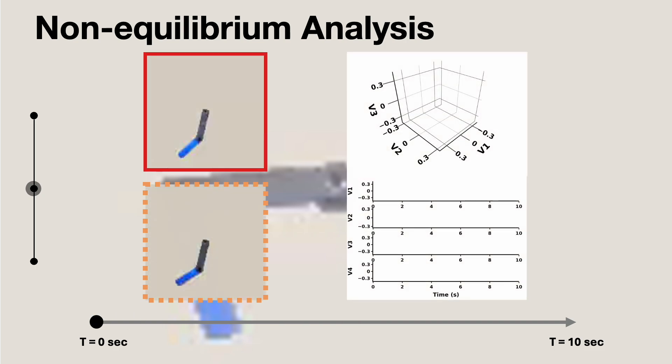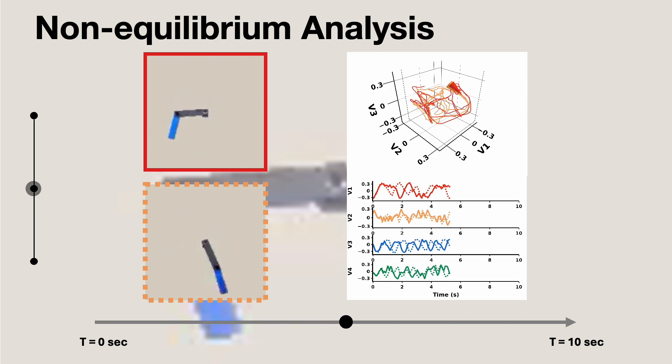In another example, we detect chaotic behavior where nearly identical initial states rapidly diverge over time and result in distorted trajectories.